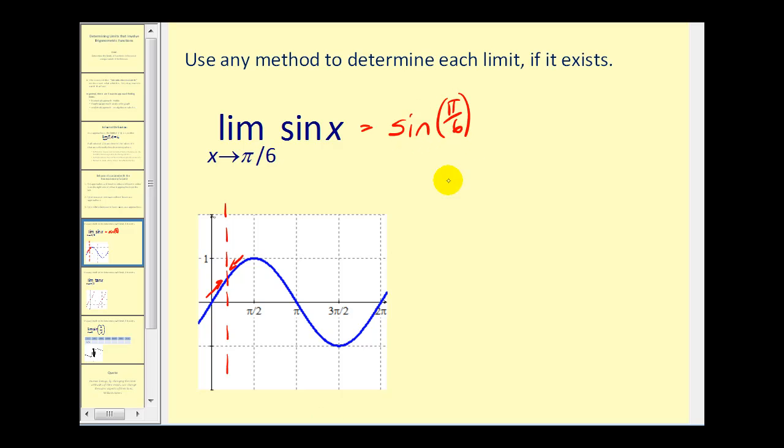This limit equals the sine of π/6. This should look very familiar. π/6 is 30 degrees, so a 30-60-90 right triangle would look something like this, where the sine of 30 equals the opposite over the hypotenuse, which is equal to one-half. So this limit equals one-half.